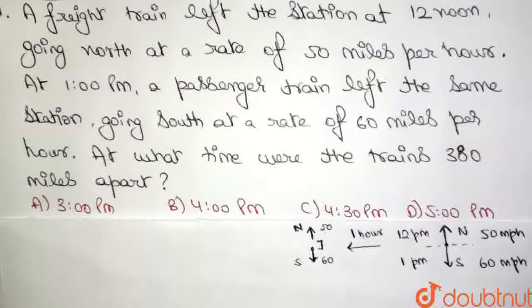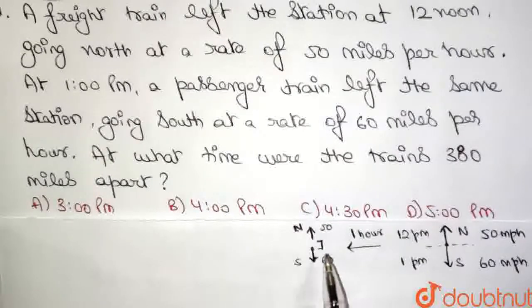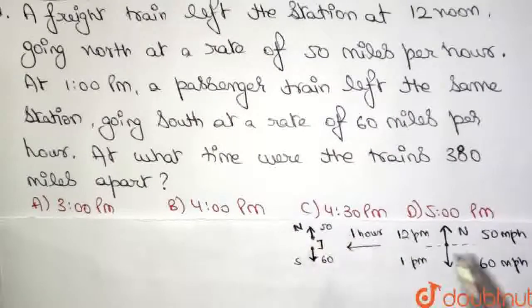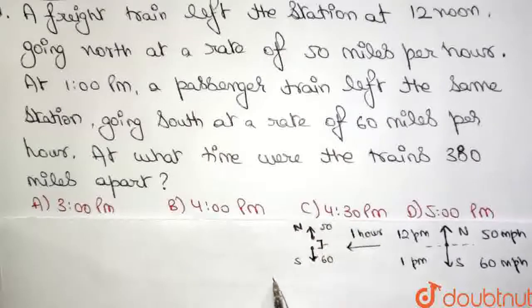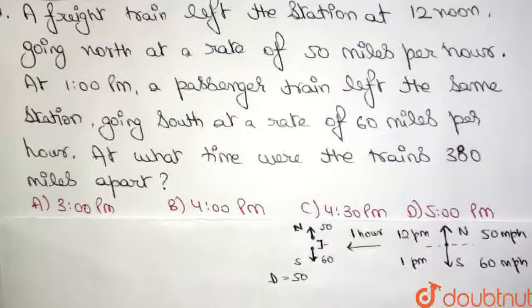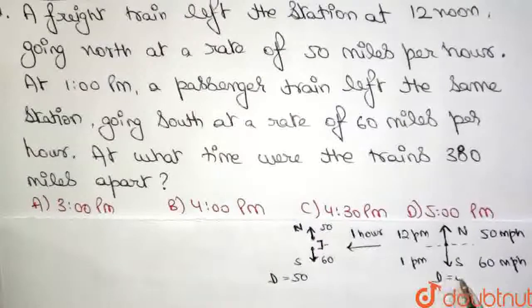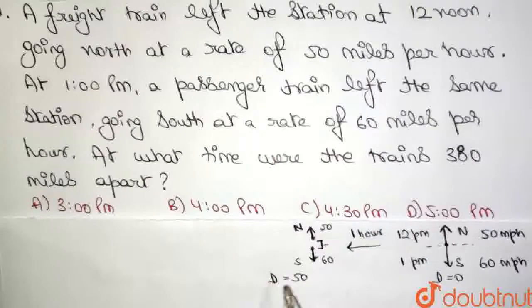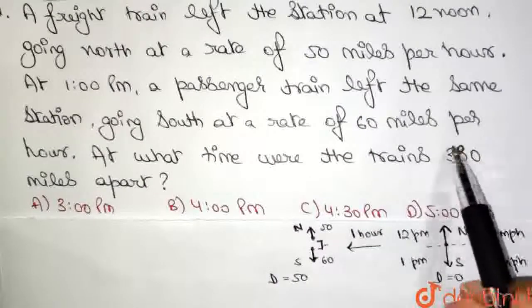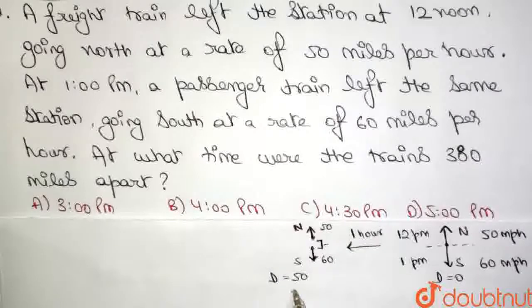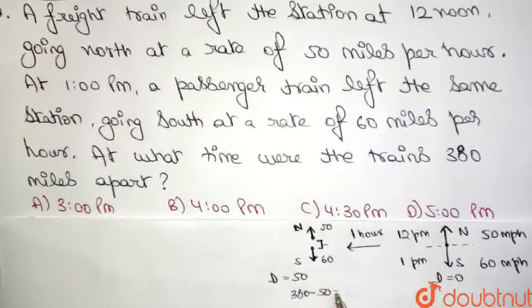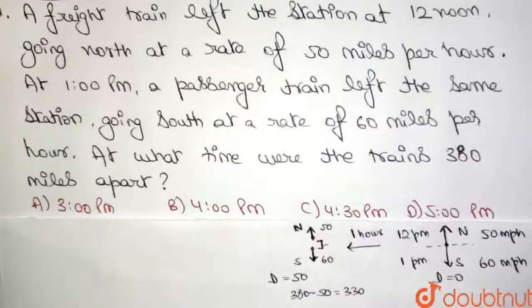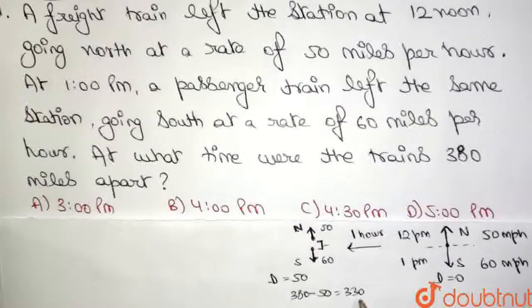But if I ask you, what is the distance between the train right now? It is 50. So, I will say that D is equal to 50 over here. And D initially was 0 at 12 pm. But at 1 pm, after 1 hour has passed, the distance has increased to 50. Or, in order to get to a distance of 380, what remains is? 380 minus 50, which is equal to 330. So, only 330 remains the distance to be covered.